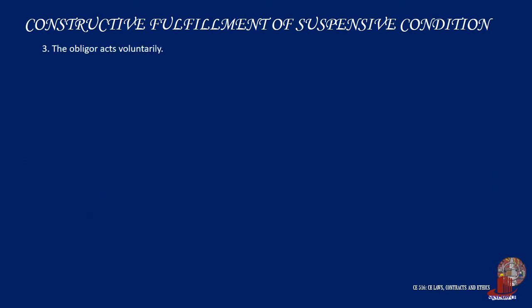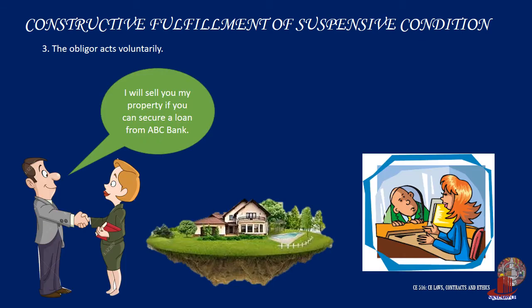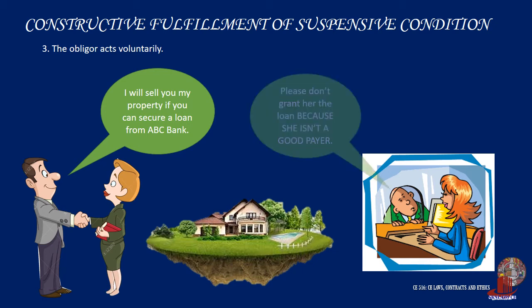The last requisite is that the obligor acts voluntarily. Suppose the inducement made by the owner was prompted by some other reason — is there a constructive fulfillment? Yes. The law does not require that the owner act with malice or fraud, as long as his purpose is to prevent the fulfillment of the condition.